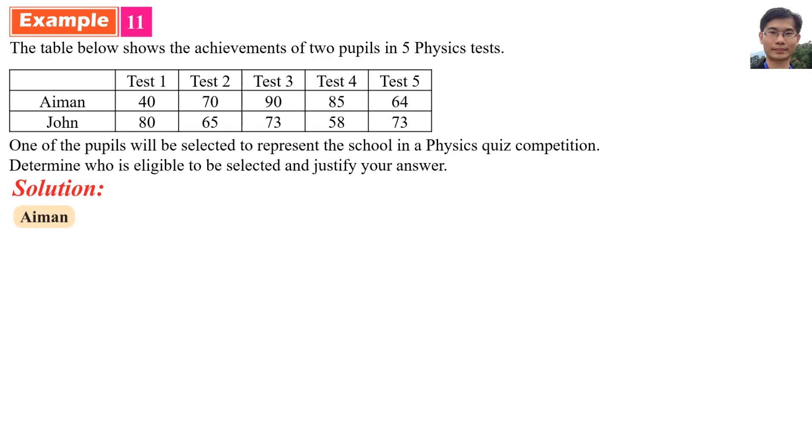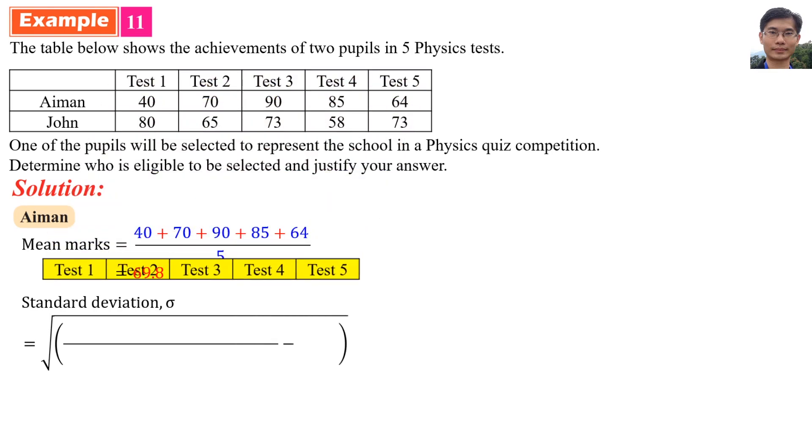We find the mean for Aiman first. Mean mark is equal to 40 plus 70 plus 90 plus 85 plus 64, divided by 5 tests. So, the mean mark is 69.8. Standard deviation is equal to square root of the sum of squared values divided by 5 minus mean squared. Square all the numbers and add them all, then minus mean square and remember to square root. So, standard deviation is 17.67.